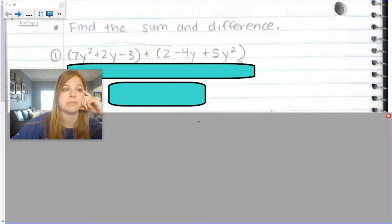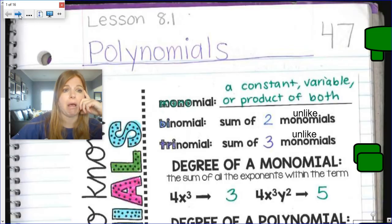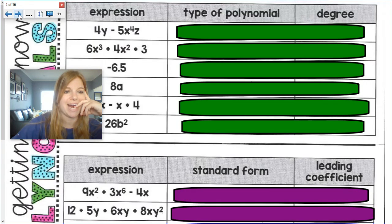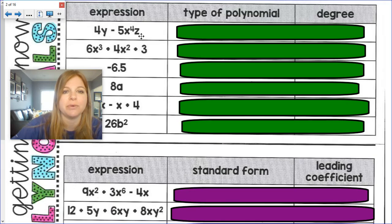First expression, 4y minus 5x to the fourth z. Type of polynomial. So I have to say, I have one term and a second term, so it looks like a binomial. Can I combine those two terms together?